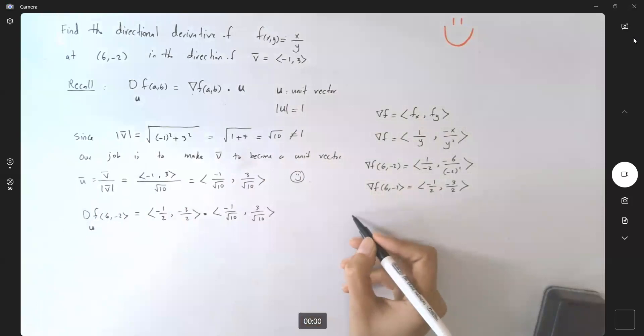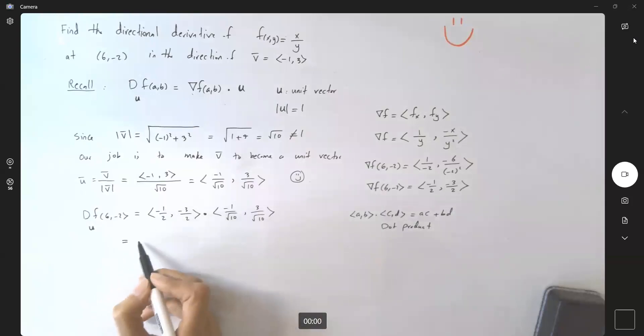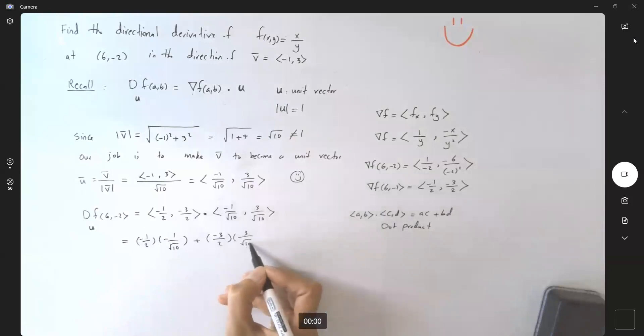Let's do the dot product. Remember that if you have the dot product between two vectors (a, b) and (c, d), you get ac plus bd. Dot product or inner product. So let's calculate this. (-1/2) times (-1/√10) plus (-3/2) times (3/√10).